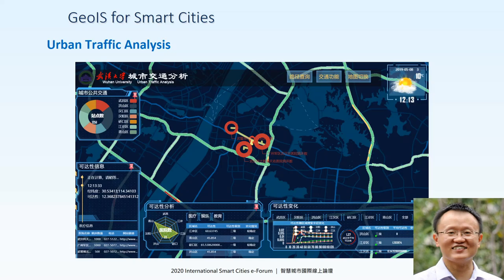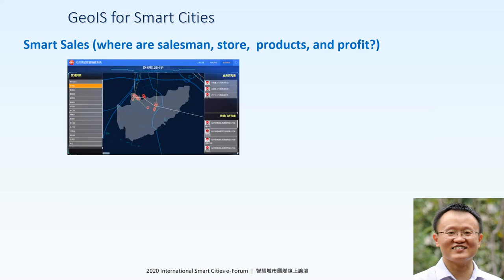We can also develop the urban traffic analysis project in this infrastructure. Because we share the GUI template and the algorithm in this infrastructure, it provides an ecosystem so people can develop various projects. We can also support the smart sales. People use this infrastructure to know where the salesmen are, where the stores are, where the products are, and how they can get a profit by optimizing their daily visits to stores. All this analysis function data we create in a space in this infrastructure, so if we make this project mature, applicable, as a best practice, then we can easily develop other kinds of projects.